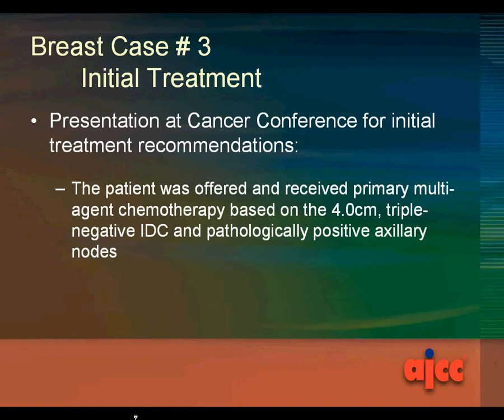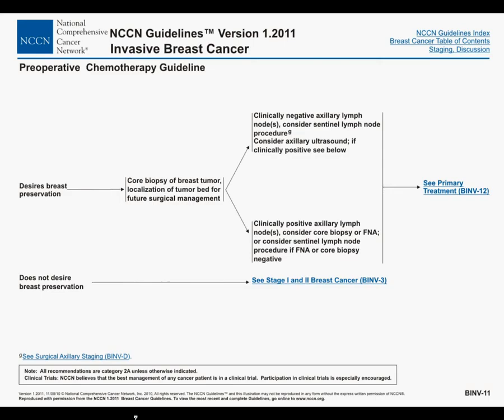This case was presented at Cancer Conference for initial treatment recommendations. The patient was offered and received primary multi-agent chemotherapy based on the 4-centimeter triple-negative infiltrating duct carcinoma and pathologically positive axillary lymph nodes. Here are the NCCN treatment guidelines.